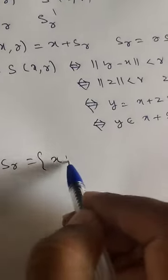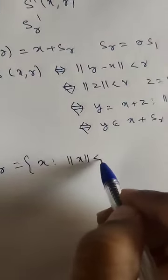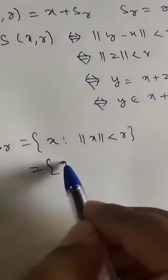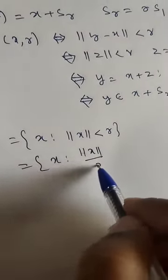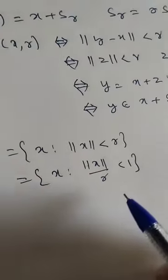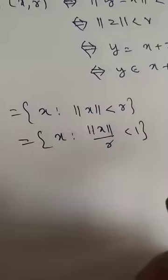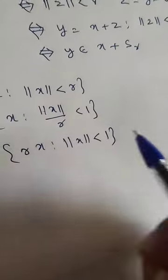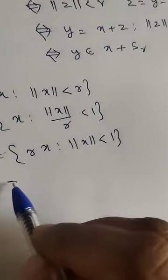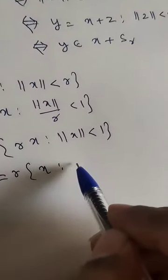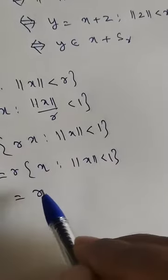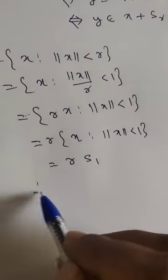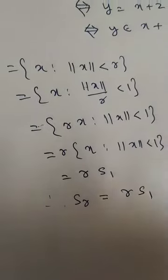Similarly, S_R is the set of all X such that ‖X‖ < R. This can be written as the set of all X such that ‖X/R‖ < 1, which equals the set of all R·X such that ‖X‖ < 1. Therefore S_R = R · S_1.